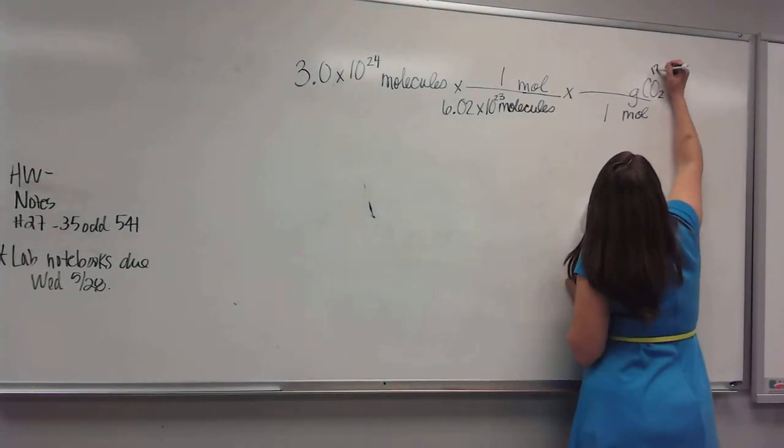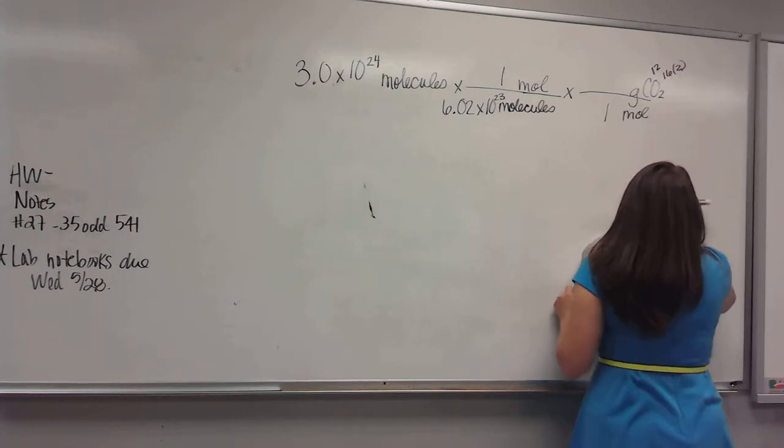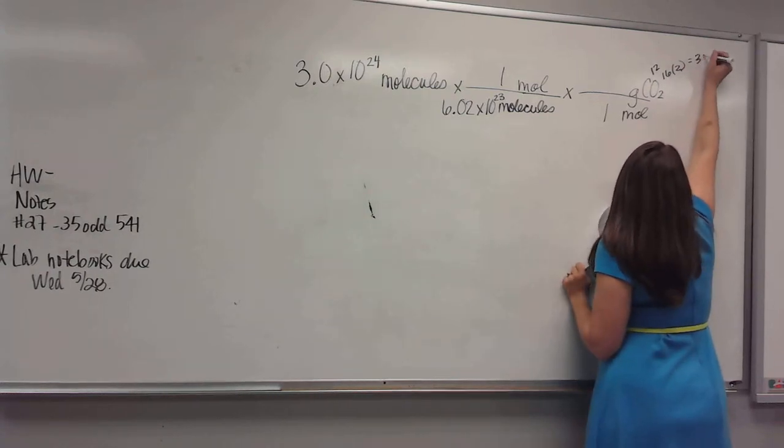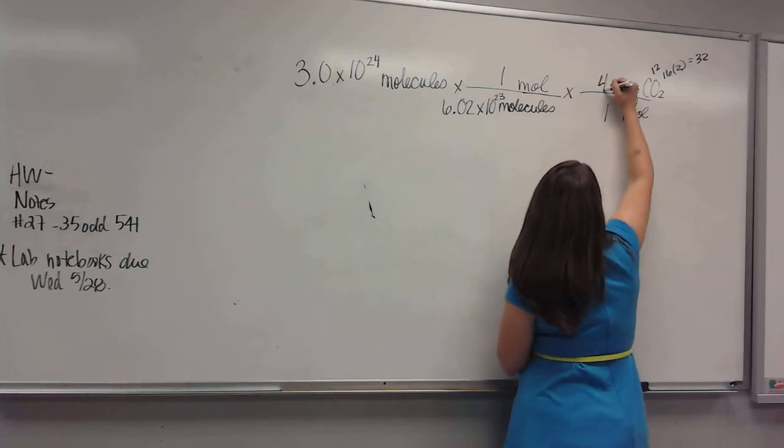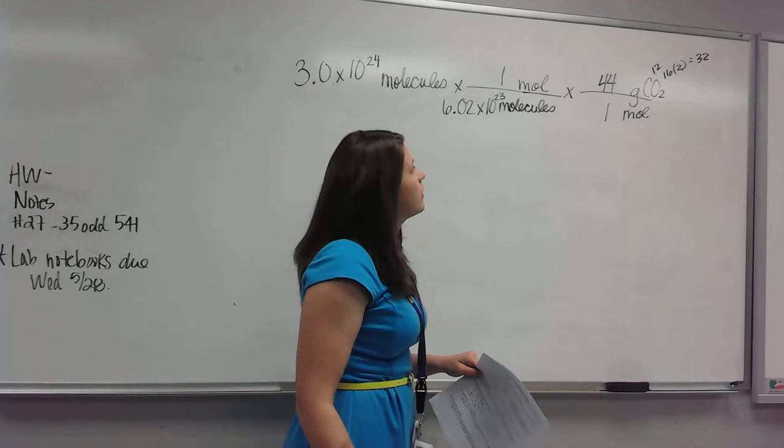Carbon is 12. Oxygen is 16, but there's two of them. So 16 times 2 is 32. 32 plus 12 is 44. Follow my math there? Okay.